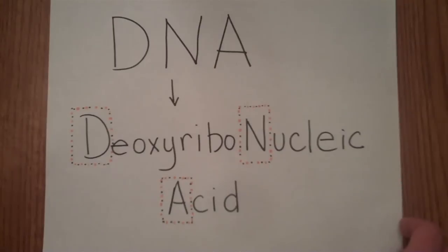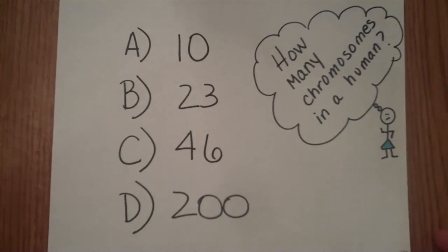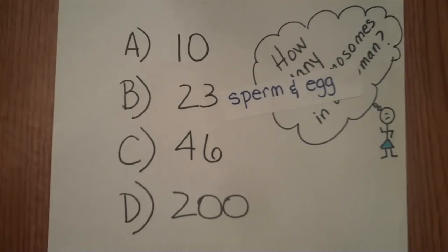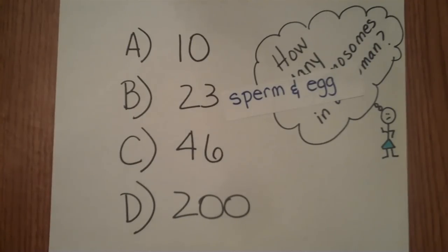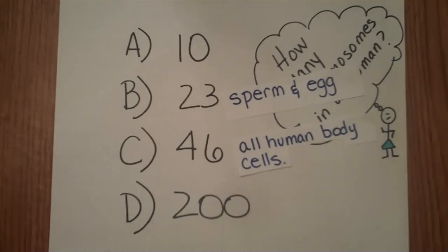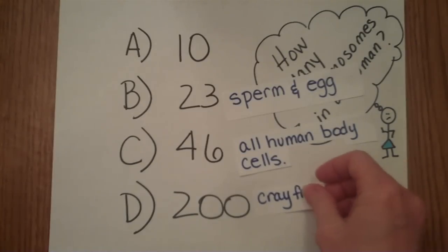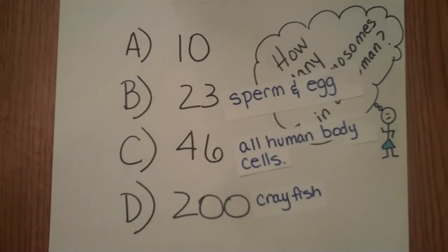So, how many chromosomes do you think humans have in each of their cells? 10, 23, 46, or 200 chromosomes? Well, if you said 23 chromosomes, you're right — as long as you're talking about a sperm and an egg. If you said 46, then you're also right, because all human body cells have 46 chromosomes. If you said 200, then you're talking about a crayfish. And what are you doing in 7th grade science anyway?